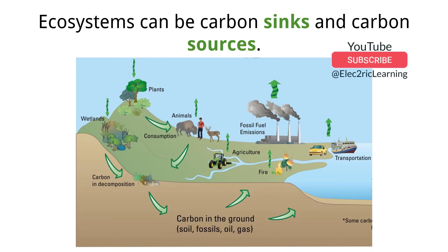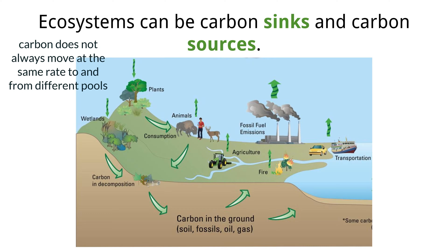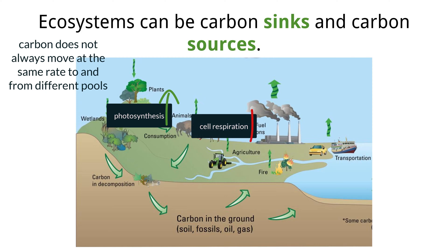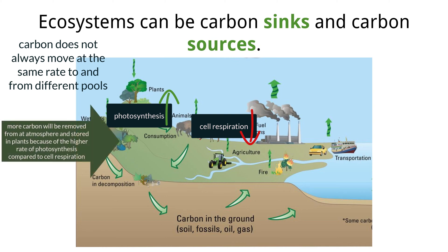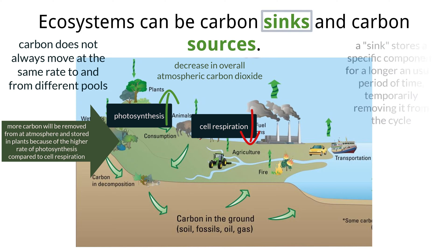When we look at carbon moving in ecosystems, it is usually a balancing act with the scales constantly changing based on current environmental conditions, meaning carbon does not always move at the same rate to and from every pool. If the collective amount of photosynthesis of all autotrophs in an ecosystem is greater than the total amount of cell respiration occurring in all organisms, more carbon will be removed from the atmosphere than enters it. We call this increase in carbon storage in a particular pool a carbon sink — it is storing more carbon than it usually does, temporarily removing it from the cycle.